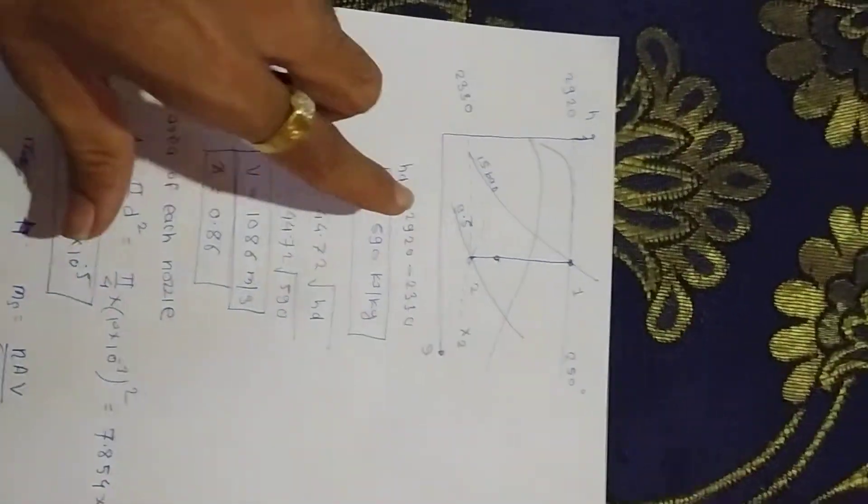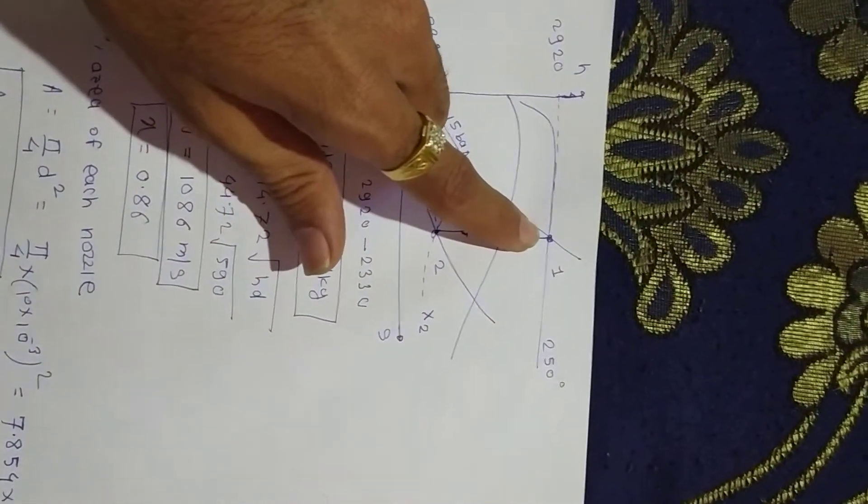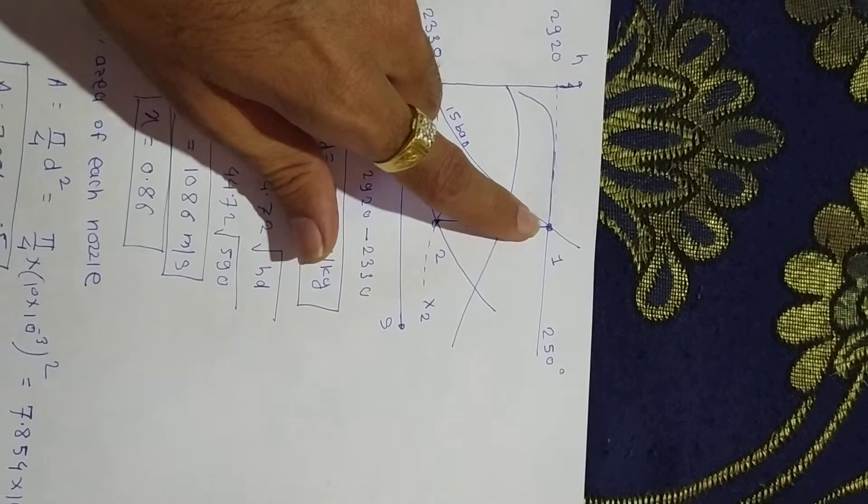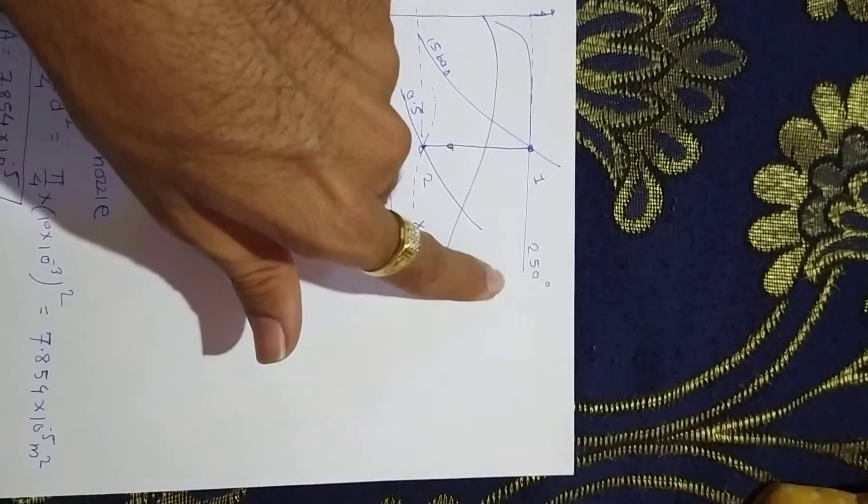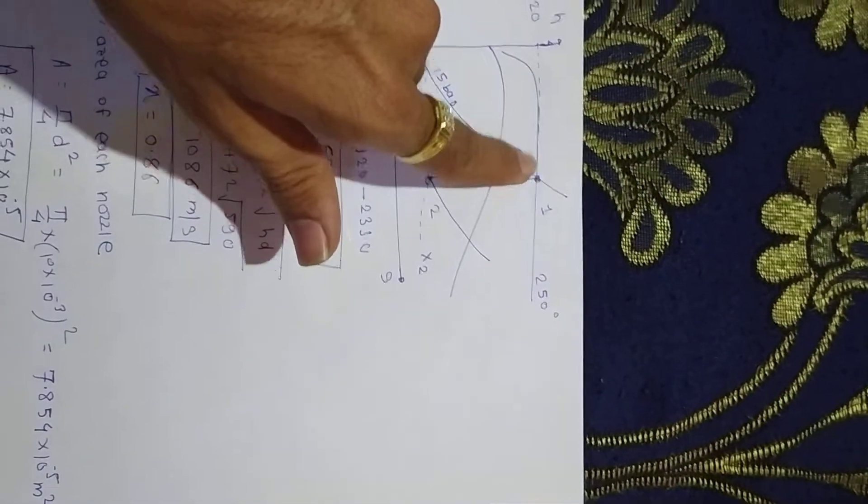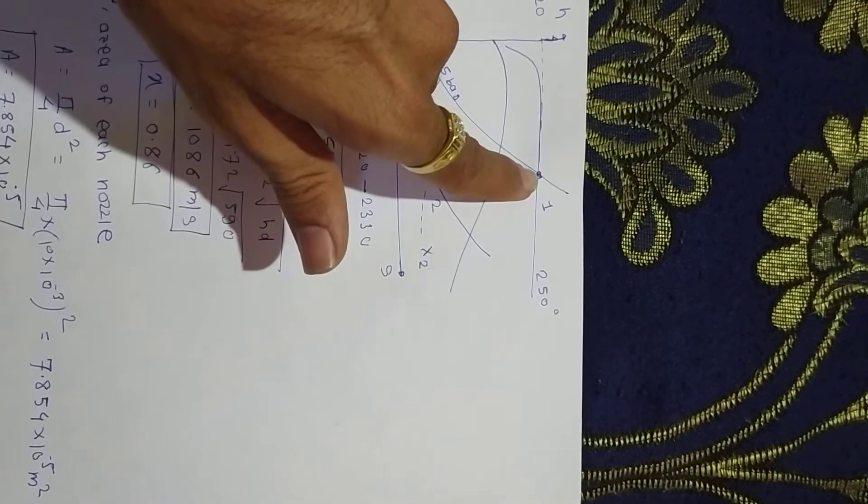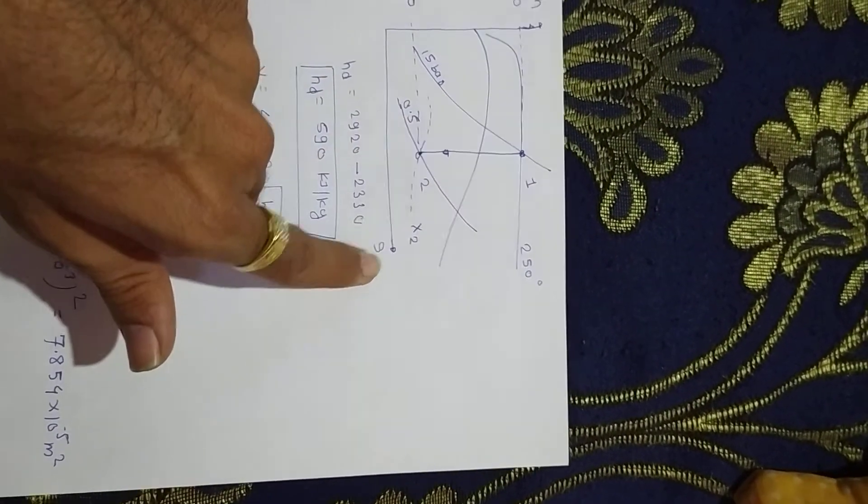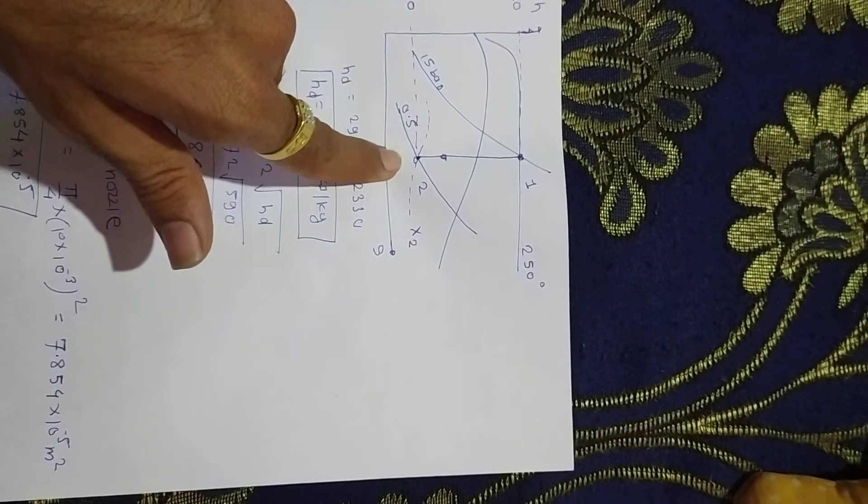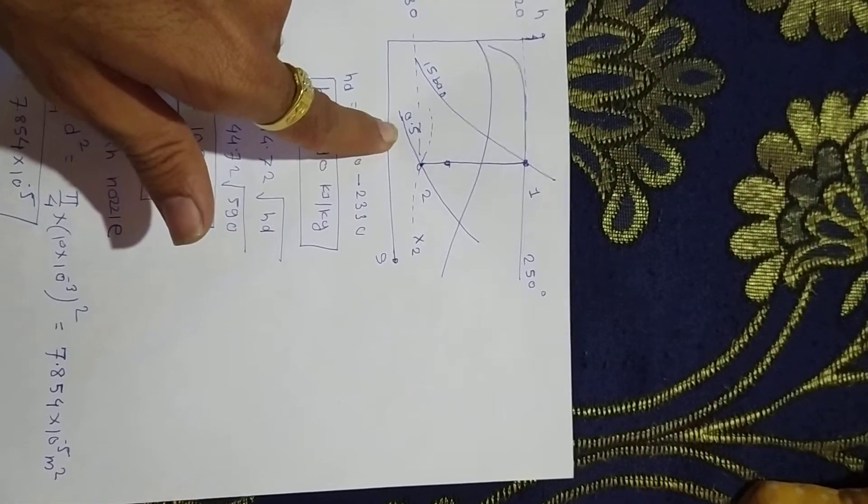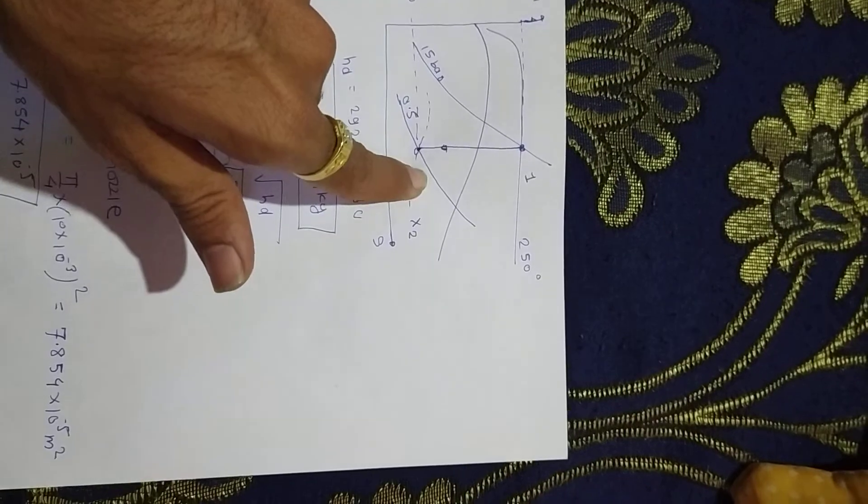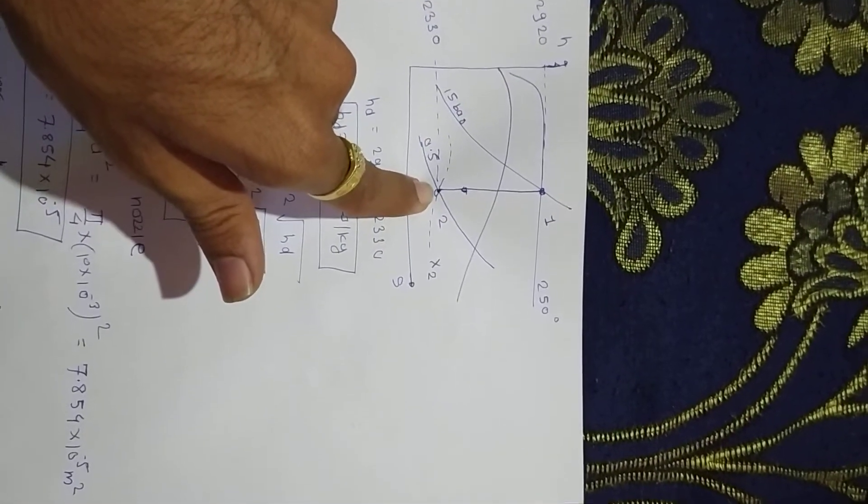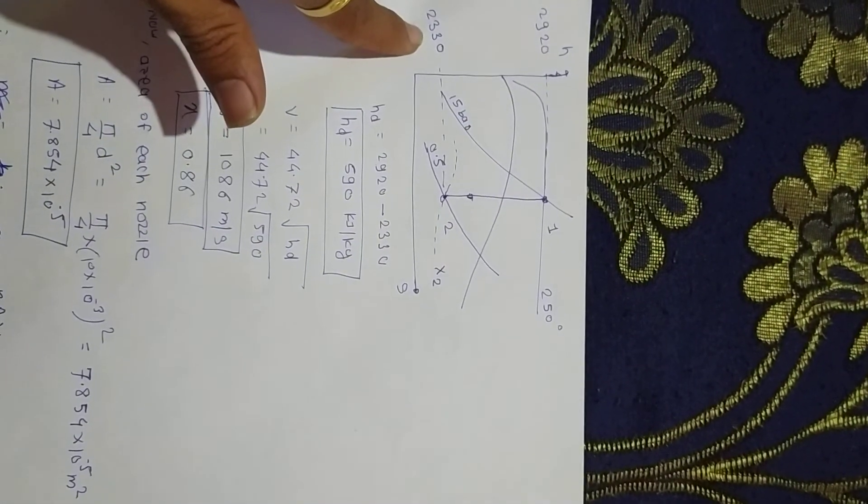V equals 44.72 times square root of HD. By using Mollier diagram we calculate the enthalpy drop. First locate point 1 at the condition of steam: 15 bar and 250 degrees Celsius. From point 1, steam expands isentropically, making a line perpendicular on the entropy axis until it intersects at the low pressure of 0.5 bar. This locates point 2.